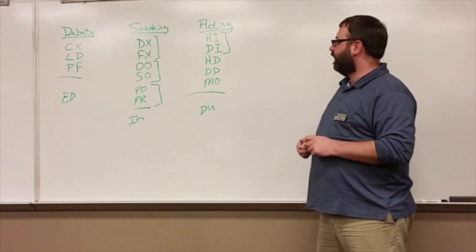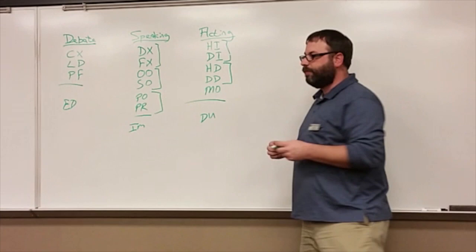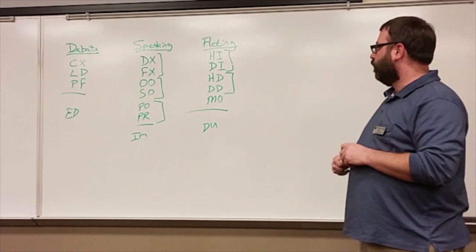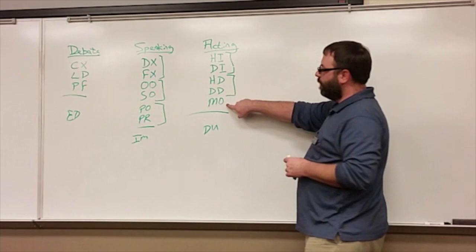And the ones with the V at the end, HV and DV, are duet acting. These are a two person team that does a script and performs for you. Same kind of idea. One distinction of both the duet acting and monologue, which is one person, is that generally speaking you're not allowed to have any props.